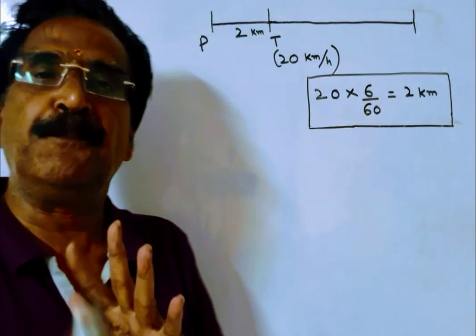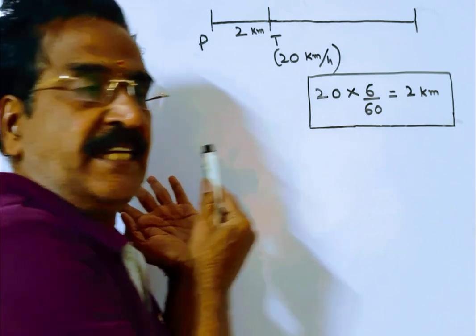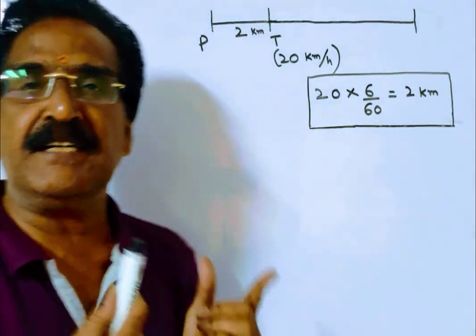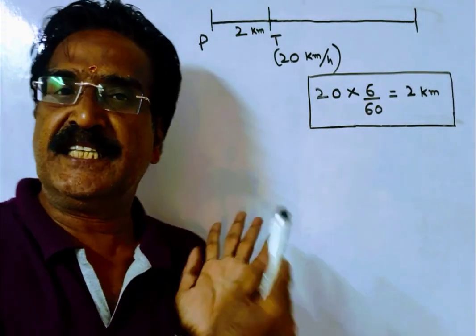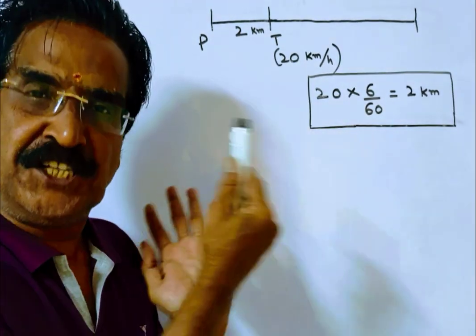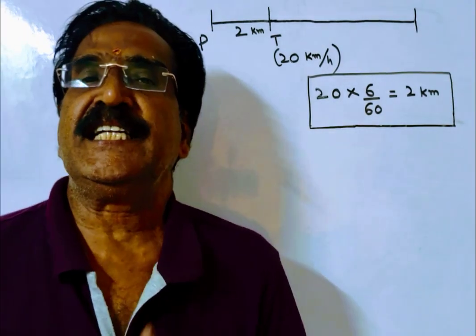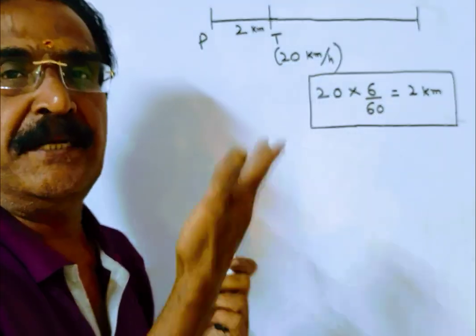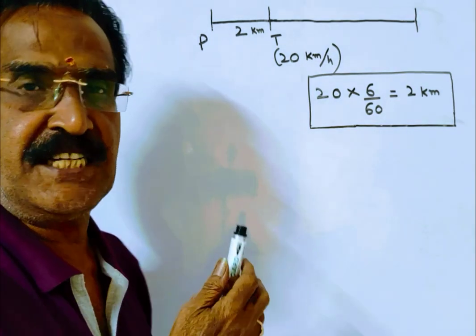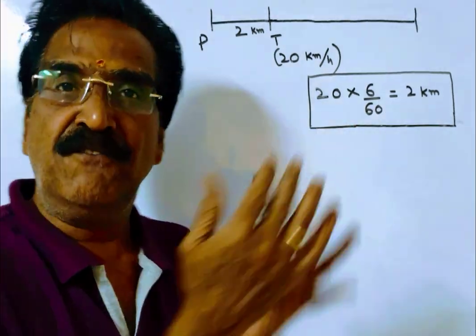By the time the police arrive at the spot, the thief has travelled 2 km. So the distance between police and thief is 2 km, that is 2000 m. Now the chasing process starts. It is given that after 24 minutes of chasing, the distance between police and thief is 400 m.